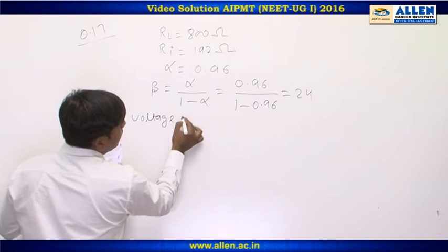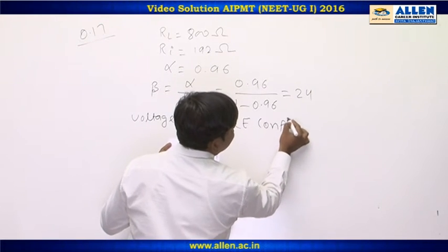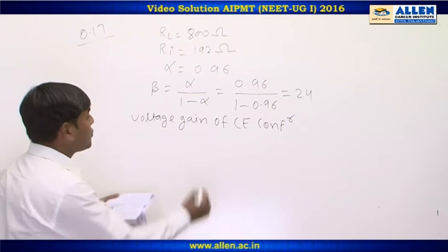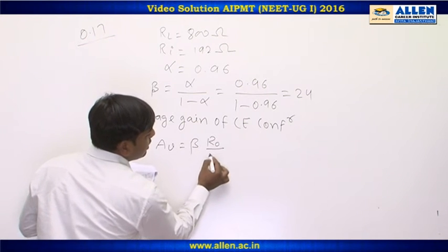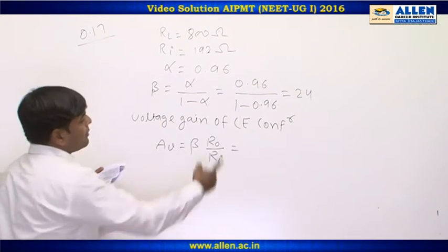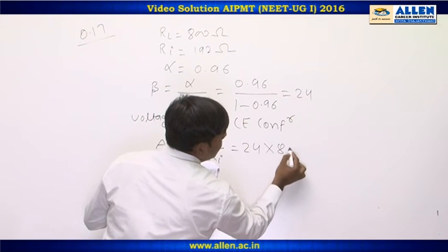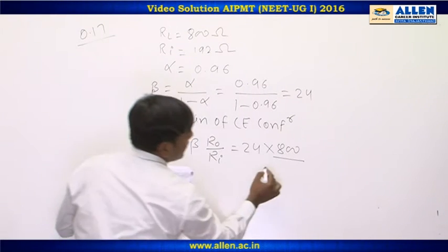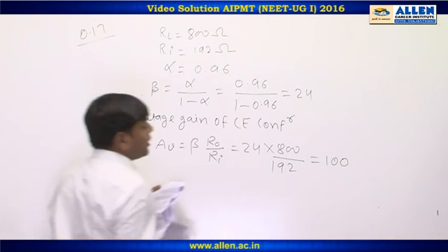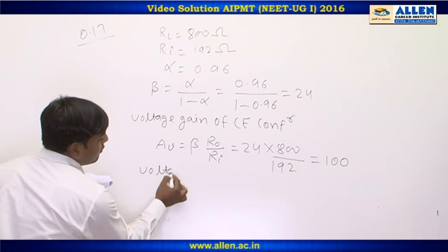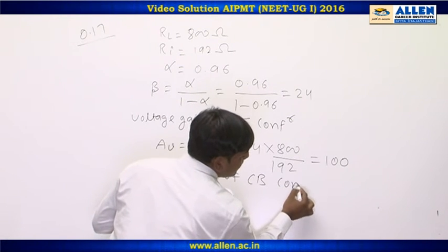Next, we calculate voltage gain for the common emitter configuration. The voltage gain for common emitter is Av = beta × (output resistance / input resistance) = 24 × 800 / 192, which gives a voltage gain of 100.